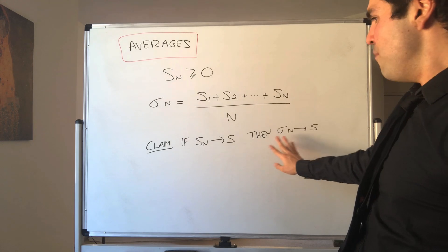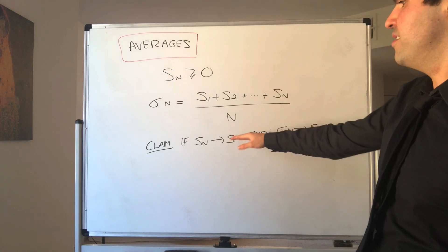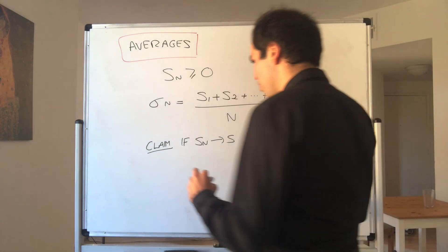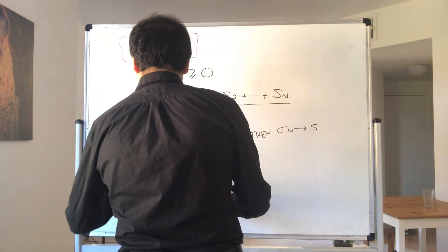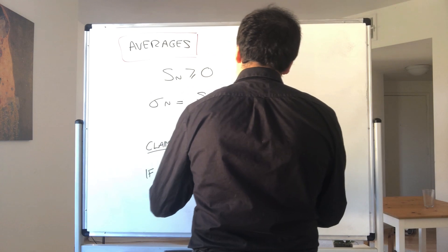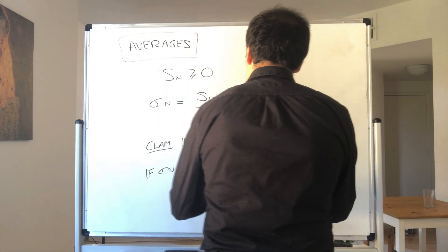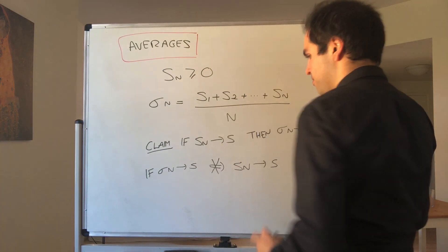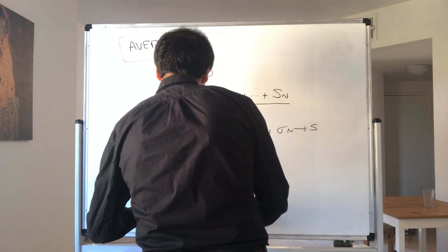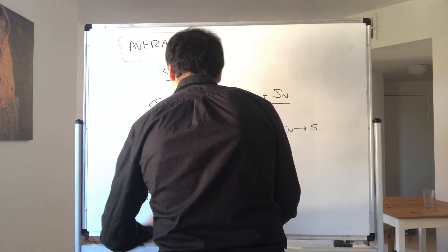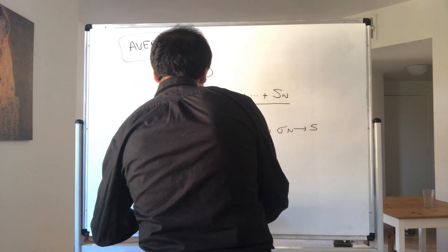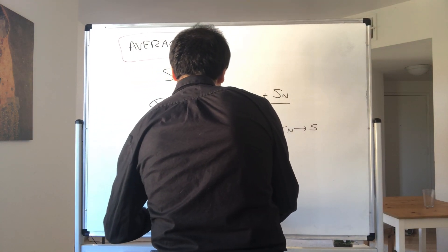But I do want to emphasize this is strict, so the converse doesn't hold. So if σn converges to S, this does not imply Sn converges to S. For instance, take Sn to be the sequence (-1)^n.